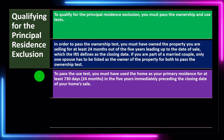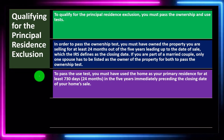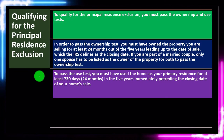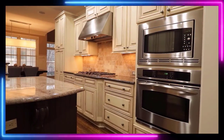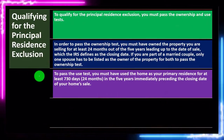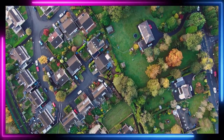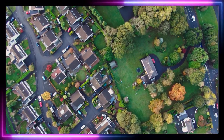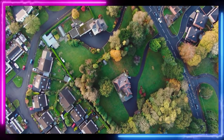To pass the use test, you must have used the home as your primary residence — basically, you're living there — for at least 730 days or 24 months in the five years immediately preceding the closing date of your home's sale. If you own one home and live in it, it's pretty straightforward. But if you have multiple properties in retirement and are trying to liquidate some, you might strategize and move into a particular property to have it as your principal residence for the required time frame.